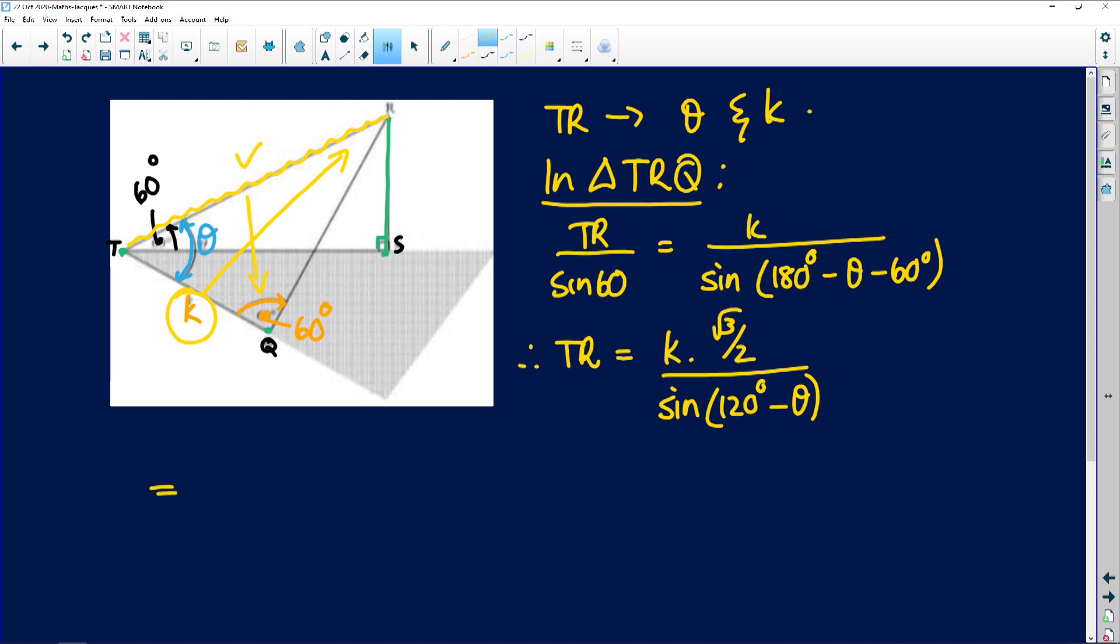So I'm going to bring the two down and I'm going to continue from here. Three times the root of k stays at the top over twice. Now this is the sine of 120 times the cosine of theta, your compound angle, minus the cosine of 120 multiplied by the sine of theta.